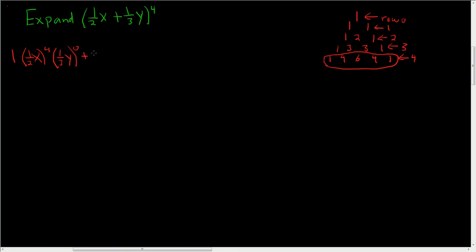Plus 4, 1 half x. Now we go down 1. So 4 minus 1 is 3. 1 third y. And then you add 1 here. 0 plus 1 is 1.